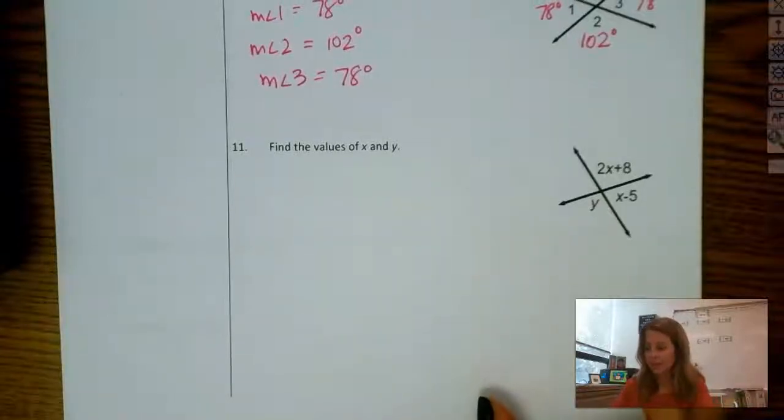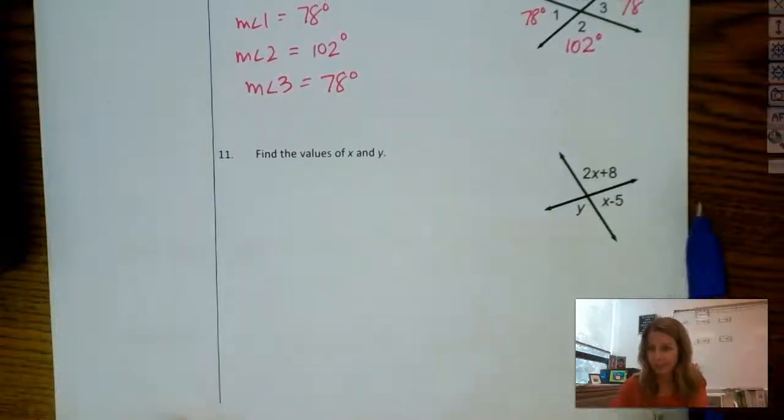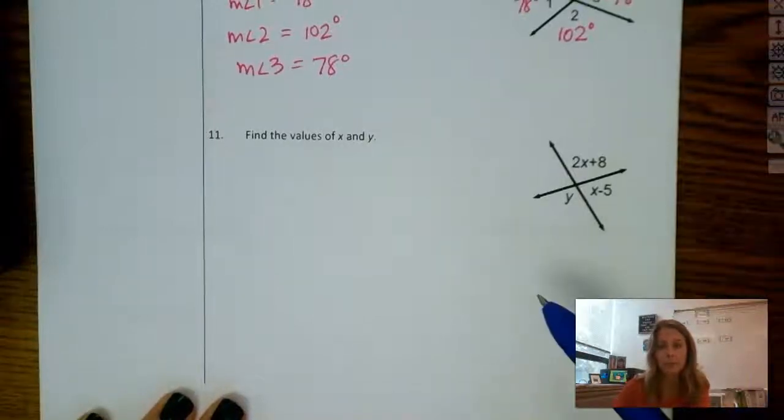All right, let's jump into these last three examples here. Find the values of x and y. So you want to interpret your picture and determine what angle relationships exist.